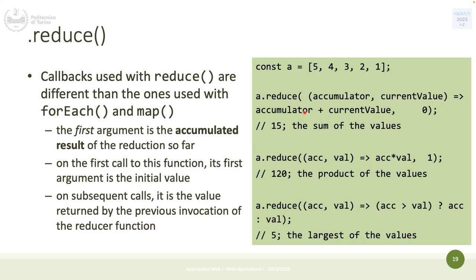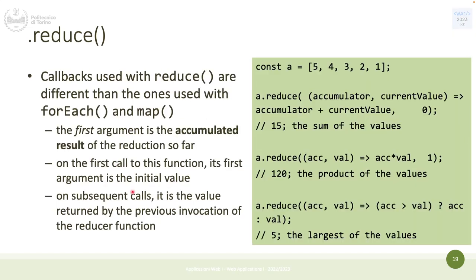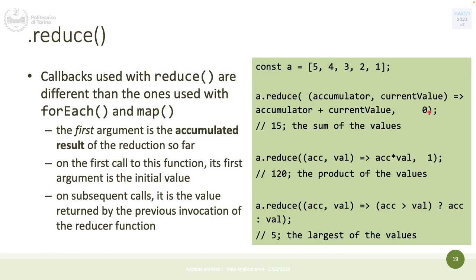For example, to sum all elements with reduce, the callback has two parameters: the accumulator (the temporary result) and the current value. The operation is accumulator plus current value. reduce also takes a second argument outside the callback — the initial value. For a sum, the initial value could be zero. So the callback and the initial value are the two arguments to reduce.